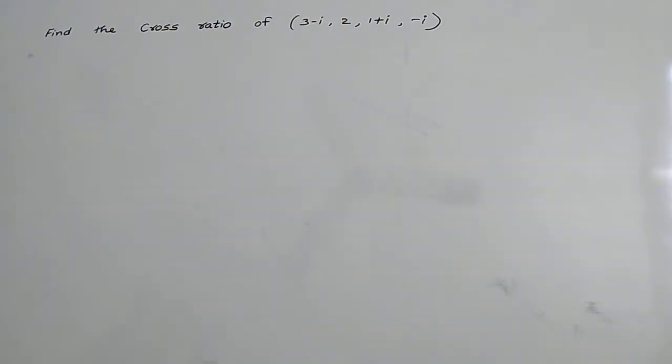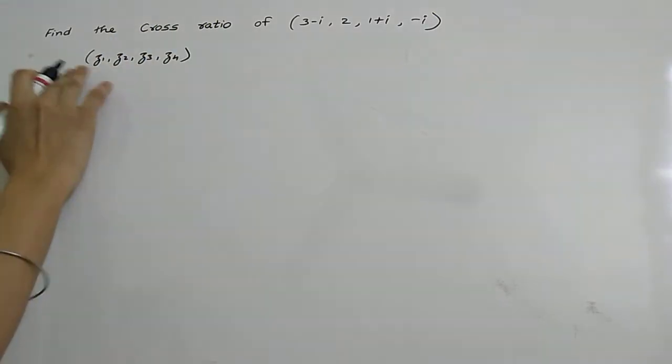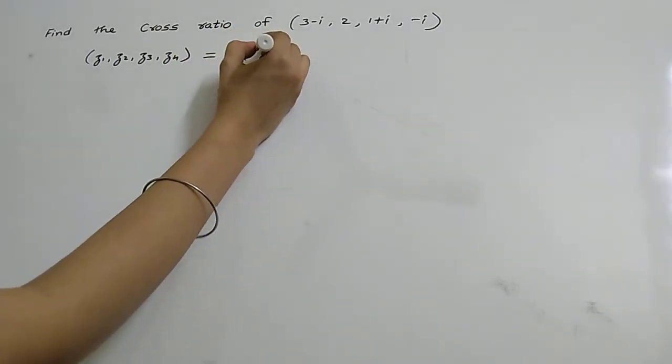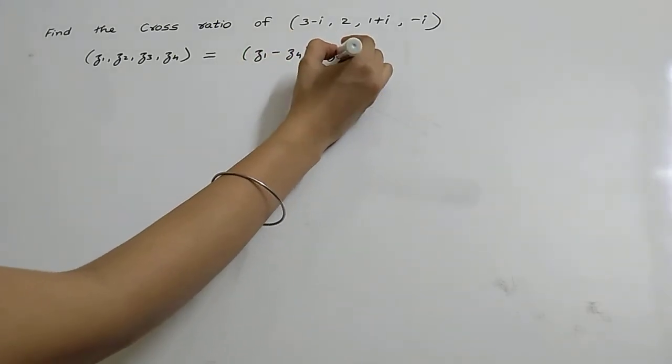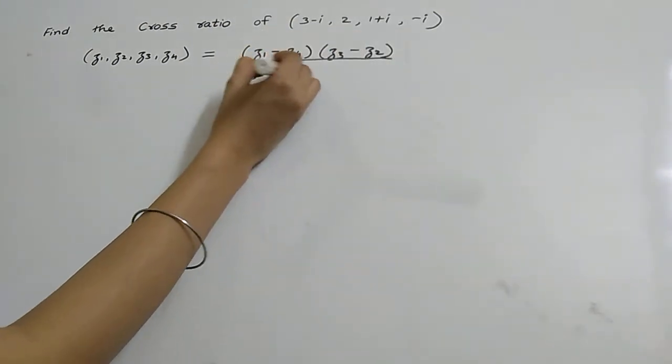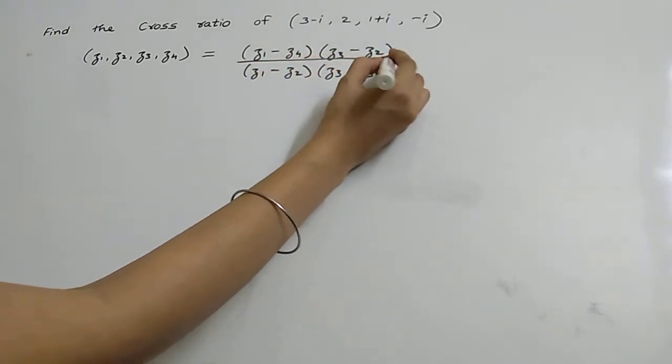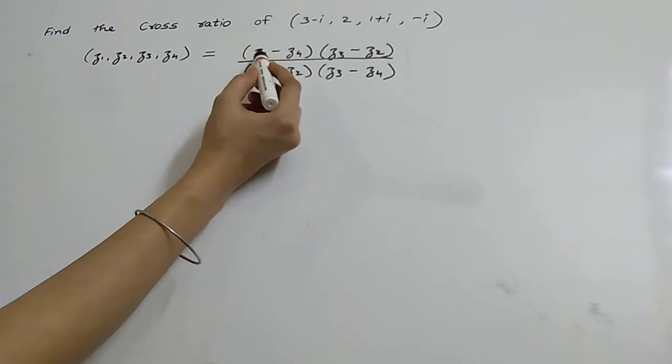This formula we have seen in the previous video. The formula for cross ratio (z1, z2, z3, z4) equals (z1 - z4)(z3 - z2) upon (z1 - z2)(z3 - z4). The way to memorize this is: 1, 4, 3, 2 upon 1, 2, 3, 4.